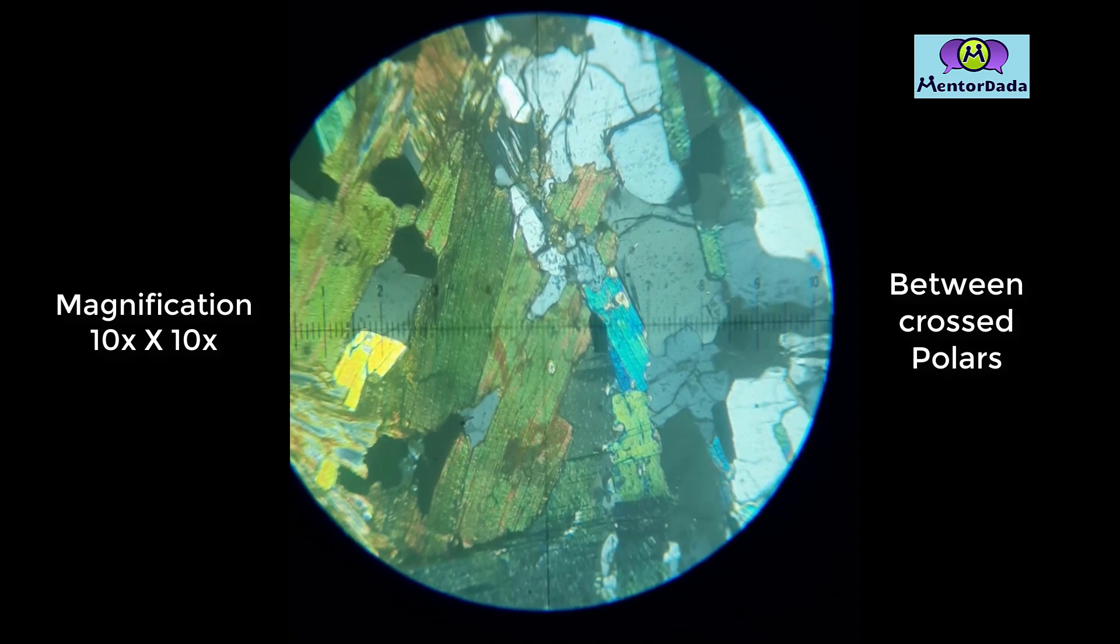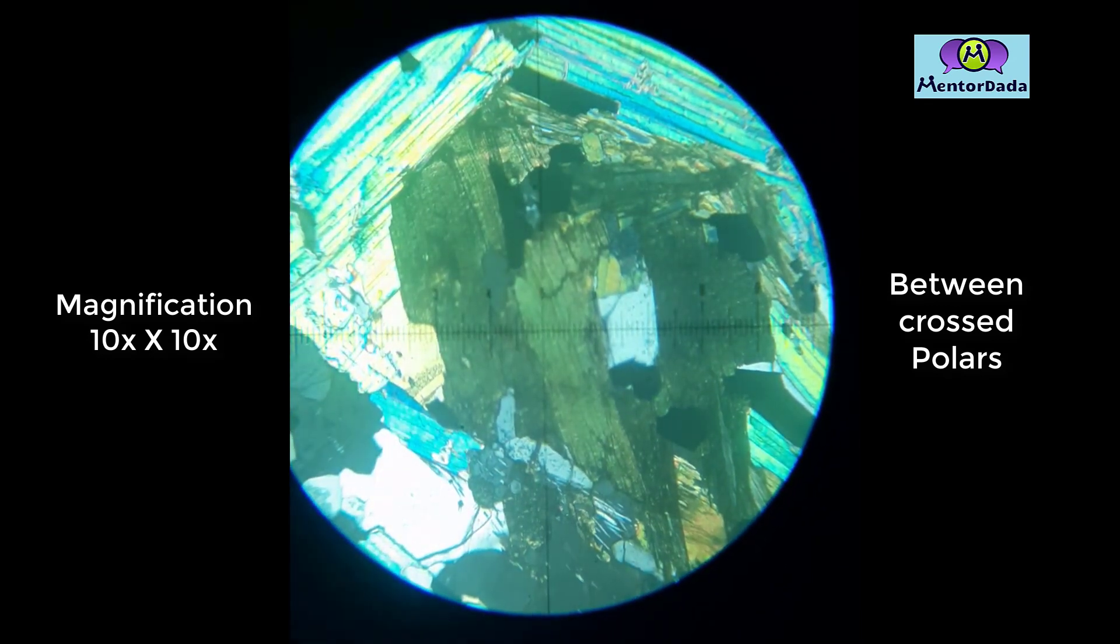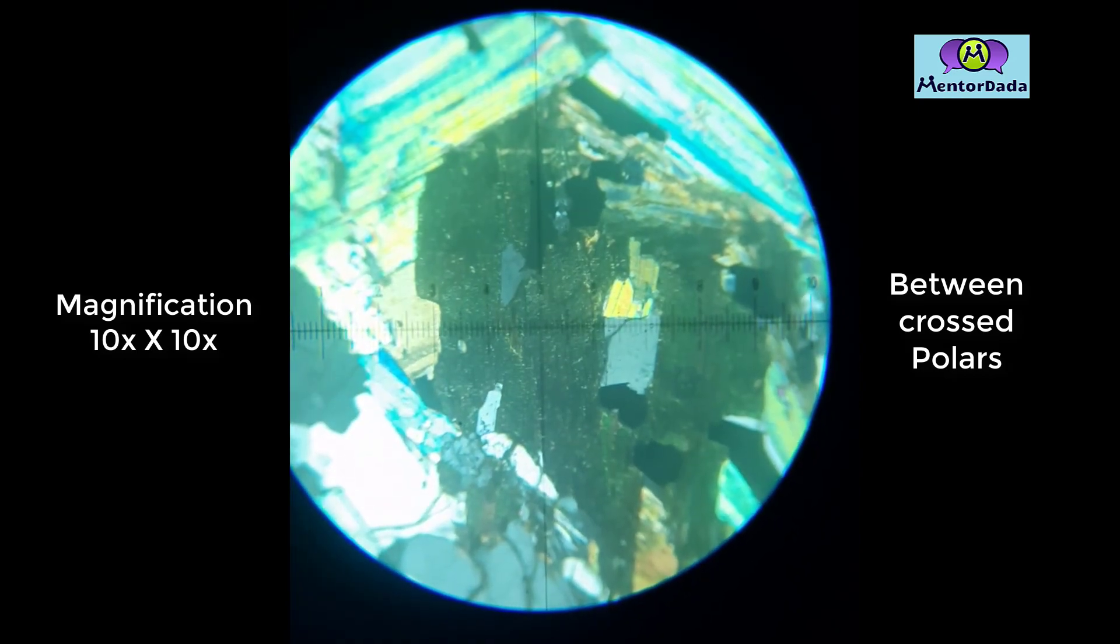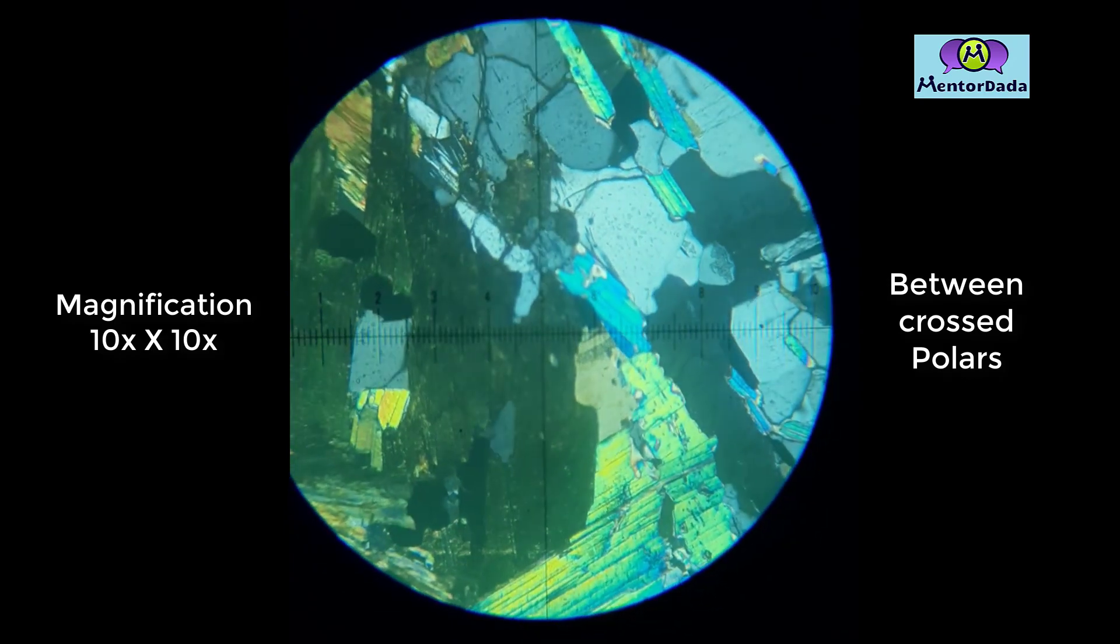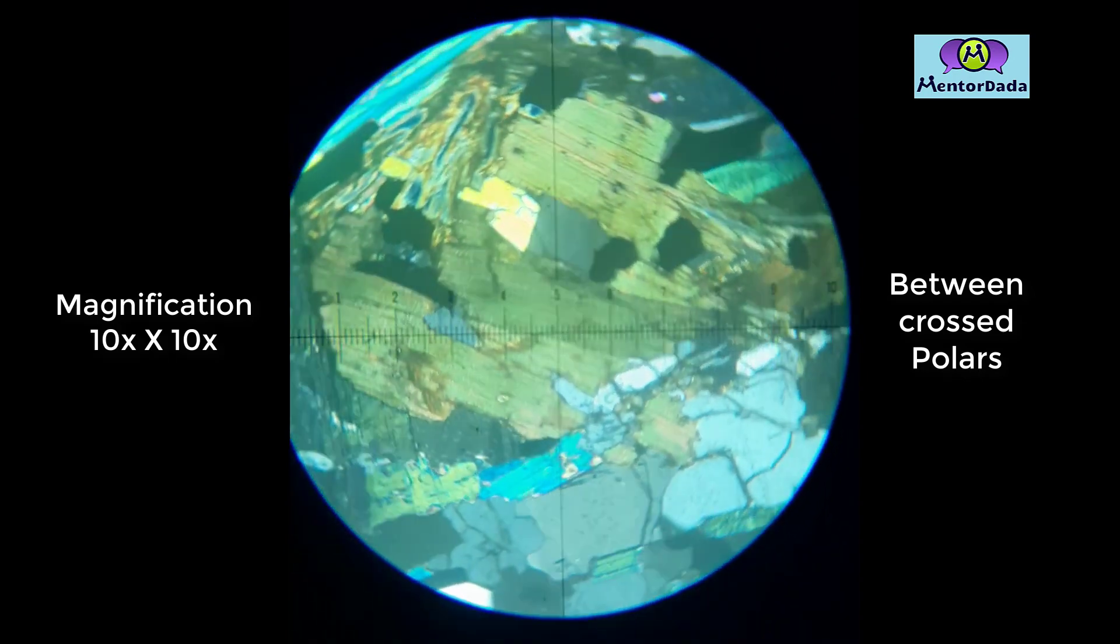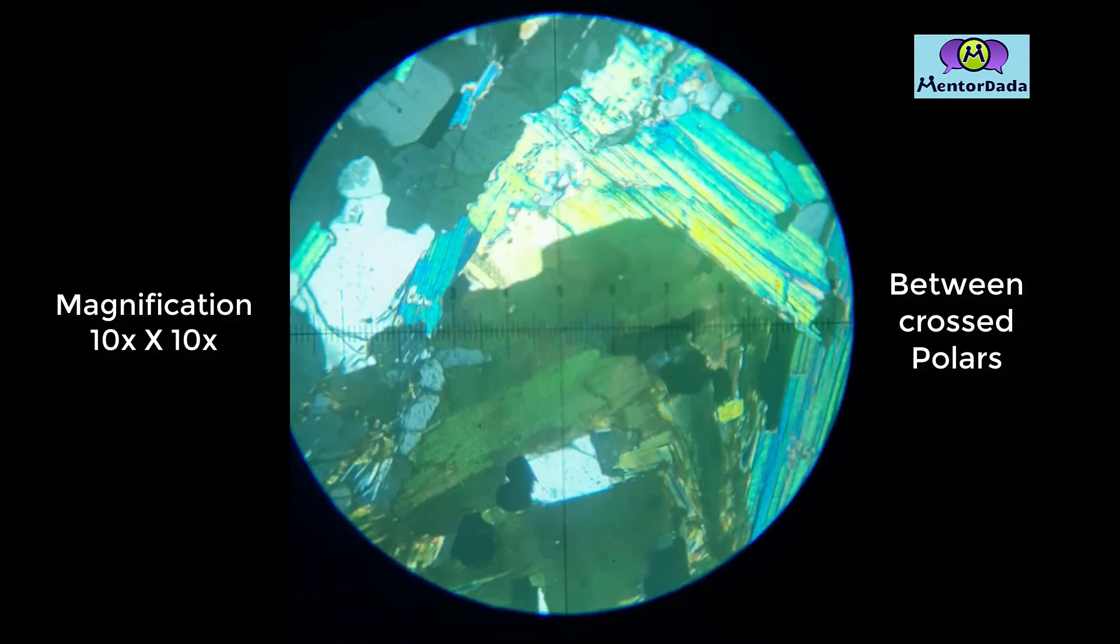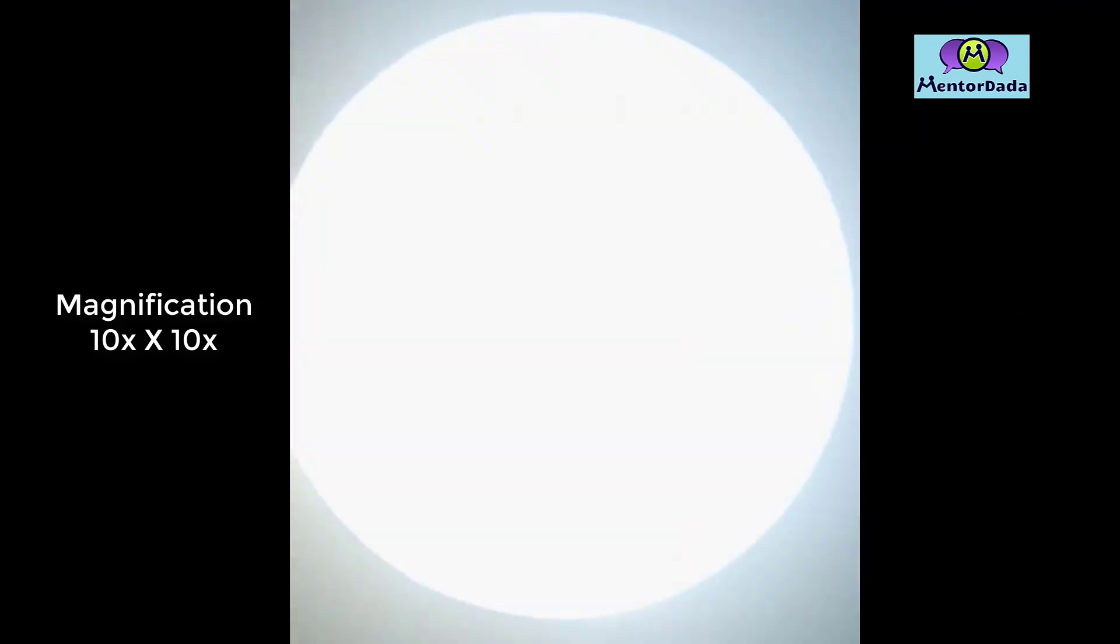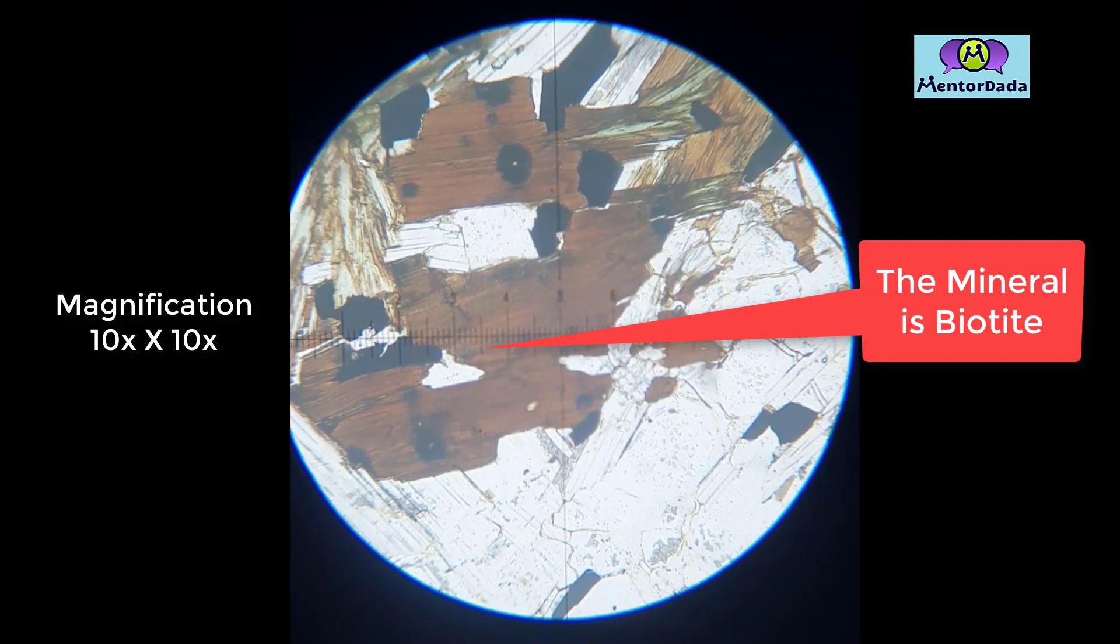Between crossed polars, the first thing we notice is the higher order interference color. Now if we align the cleavage parallel with any of the analyzer or polarizer's vibration direction, we can observe straight extinction. There is no twinning being observed here. Even in extinct position, we observe as if some light is peeping through small holes. That type of extinction condition is called mottled extinction. Hence, we can conclude this mineral to be biotite.